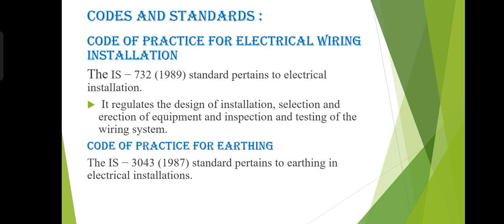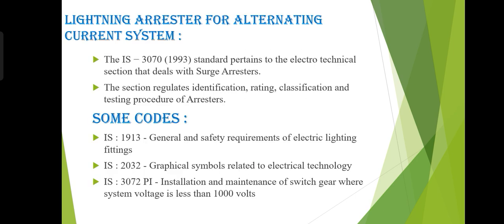For lightning arrestors for alternating current systems, IEA 3070:1993 pertains to the electro-technical section dealing with surge arrestors. This standard regulates the identification, rating, classification, and testing procedure of arrestors. Additional codes include IEA 1930 for general and safety requirements of electrical lighting, and IEA 2032 for graphical symbols related to electrical technology.